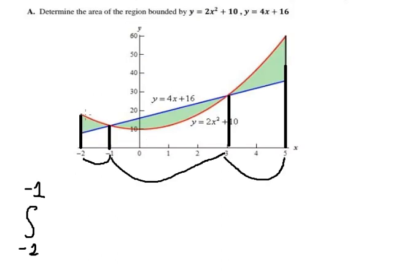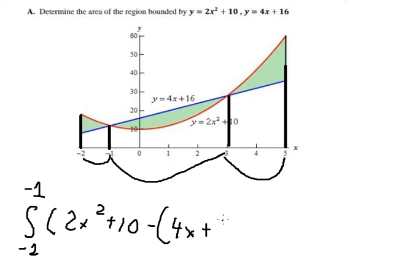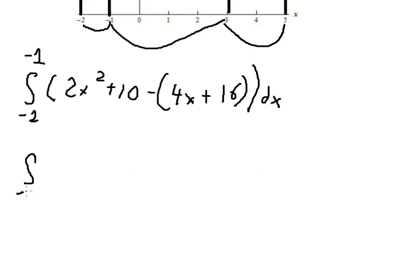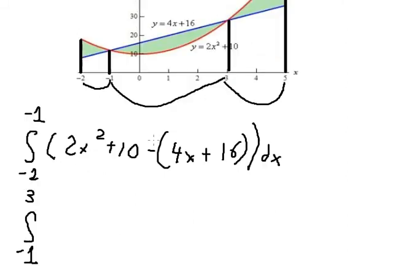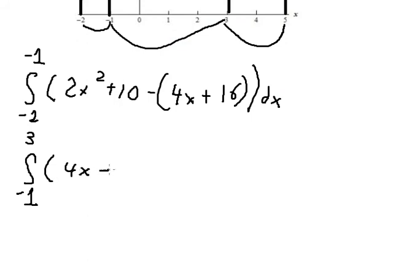For the first region, from negative two to negative one, we can see that the red curve is above the blue line. So we have the integral of (2s² + 10) minus (4s + 16) ds. For the second region, from negative one to positive three, the blue line is above the red curve, so we have the integral of (4s + 16) minus (2s² + 10) ds.